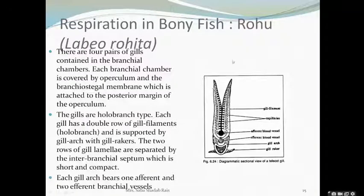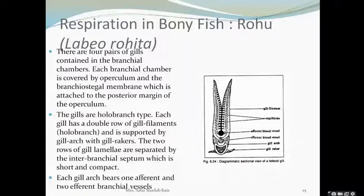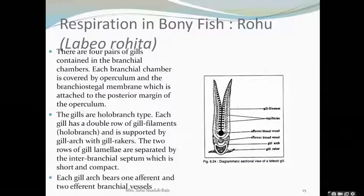Each gill arc bears one afferent and one efferent branchial vessel. The afferent vessel brings deoxygenated blood to the gills, and the efferent branchial vessel takes away the oxygenated blood, because oxygenation occurs here. That means pulmonary — or rather branchial — respiration occurs at the gills.